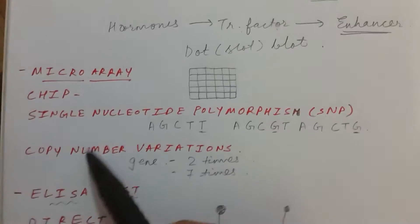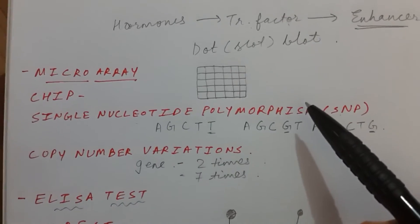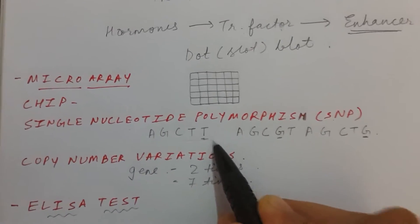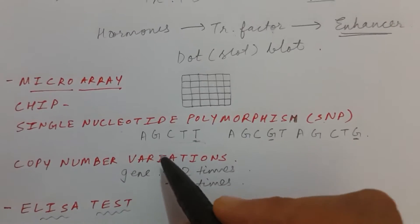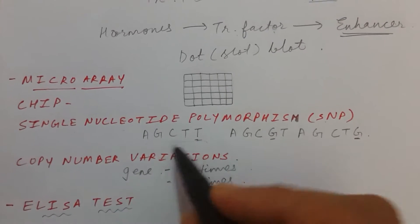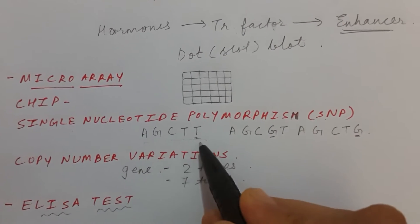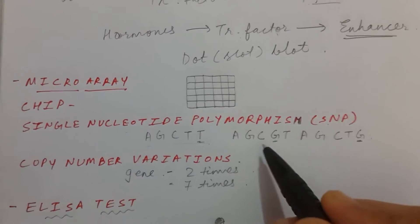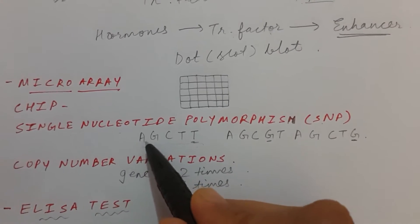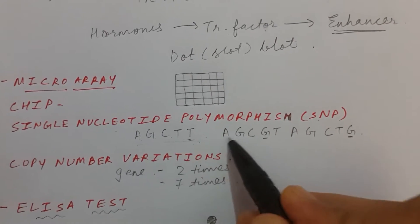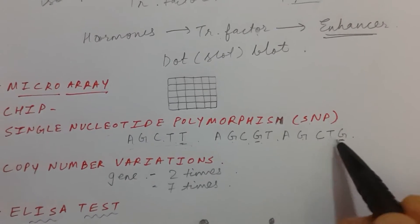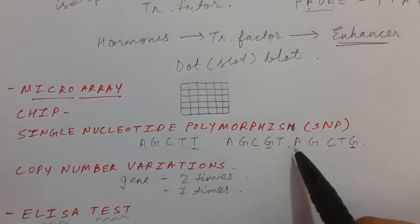Another term is Single Nucleotide Polymorphism. Suppose this is a specific sequence of nucleotides in a DNA. In one person the sequence is A-G-C-T-T, in another person it can be A-G-C-G-T, and in a third person it can be A-G-C-T-G. So there is a single nucleotide change in every person.